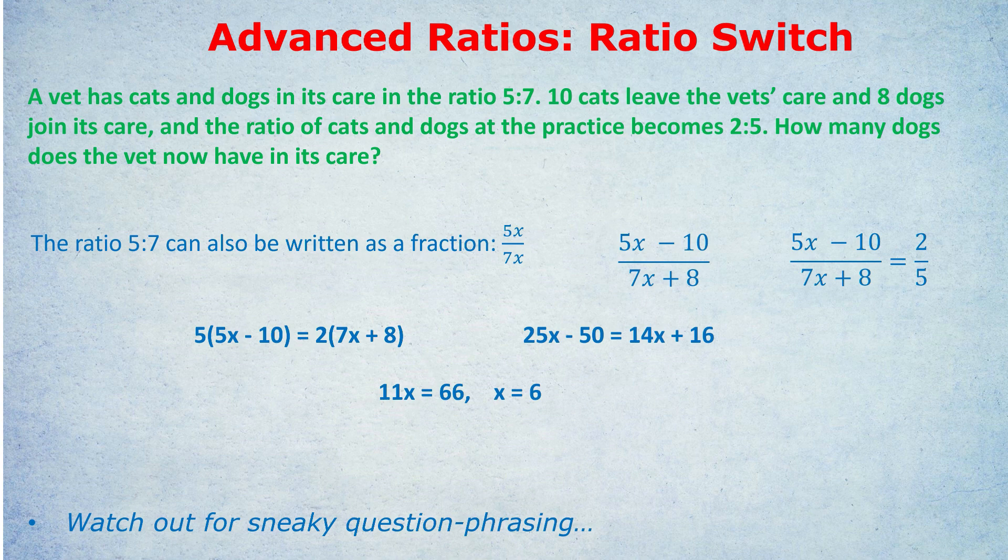Now here comes the moment of truth. What therefore is the answer to the question? Many of you would at this point say 42, and I don't blame you, but that's not actually right. Okay, x is six. Therefore, if we use that original fraction, we'll go back to that original fraction, five x over seven x, putting six in, we get 30 on the top, that's cats, 42 on the bottom, that's dogs. And you're now protesting, you're going, but the question was asking about dogs. It says how many dogs does the vet now have? Seven times six is 42. So why is it not 42? Well, I've written at the bottom, watch out for sneaky question phrasing. The question said, how many dogs does the vet now have in its care? If you look back at the last question, we were asking about the original situation. How many sweets did Philip have? Now we're asking about the new situation. Something has actually changed. It's not a hypothetical.